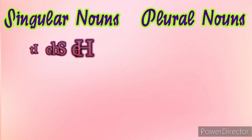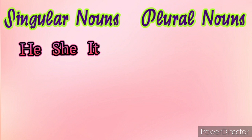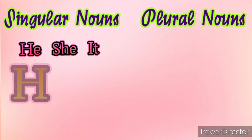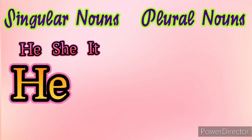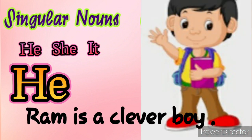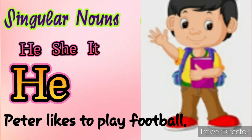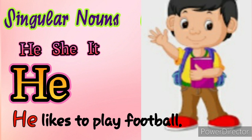He, she, and it are used in the place of singular nouns. 'He' is used in the place of masculine gender. For example: Ram is a clever boy — He is a clever boy. Peter likes to play football — He likes to play football.